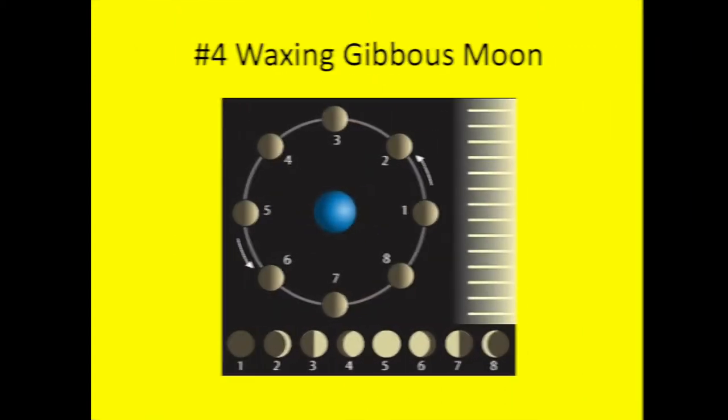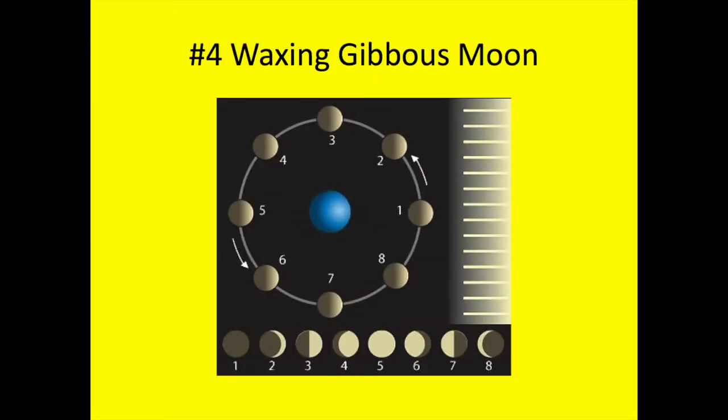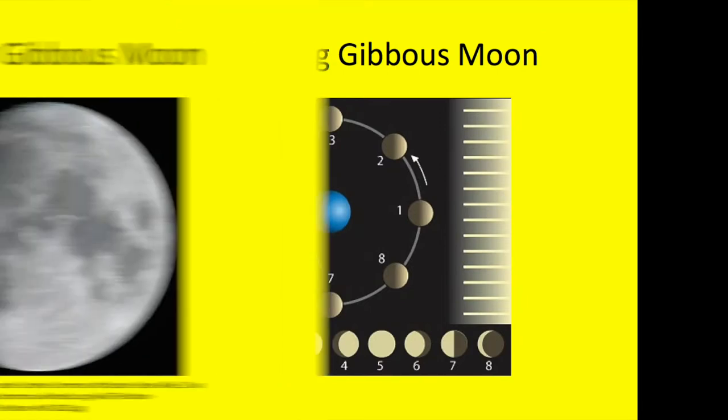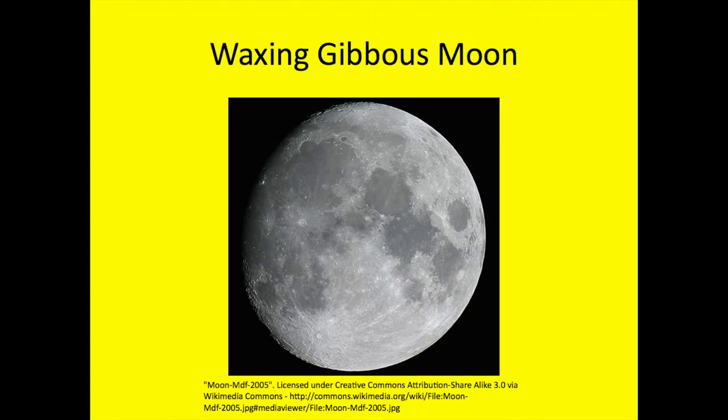Phase 4 is a waxing gibbous moon. This means that the moon is becoming gibbous, that is, it is larger than a half moon and is getting fatter each night.